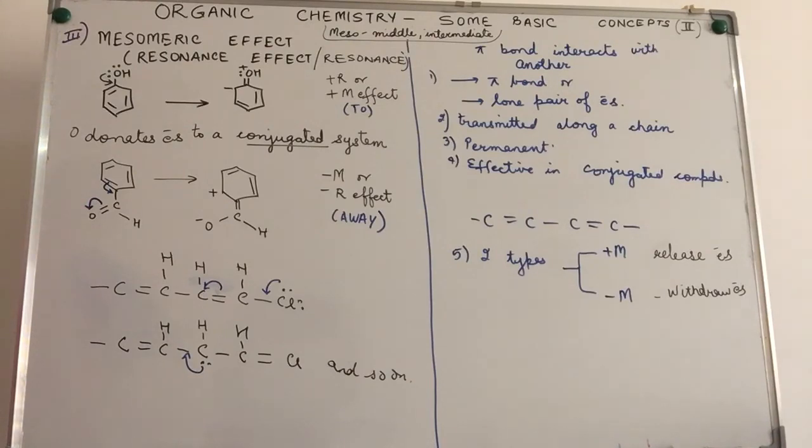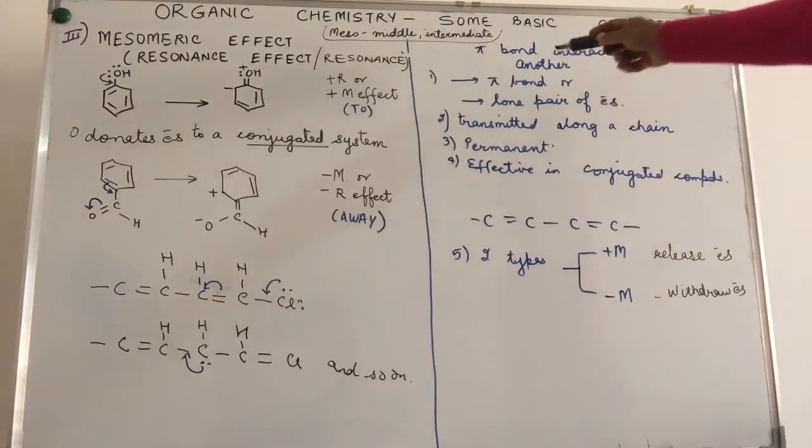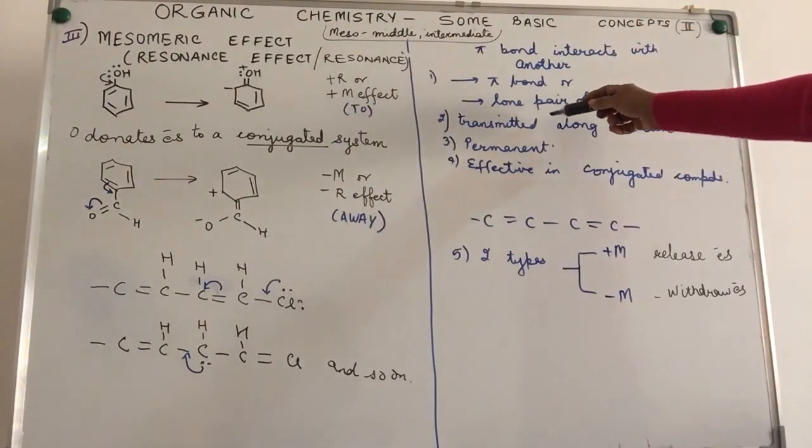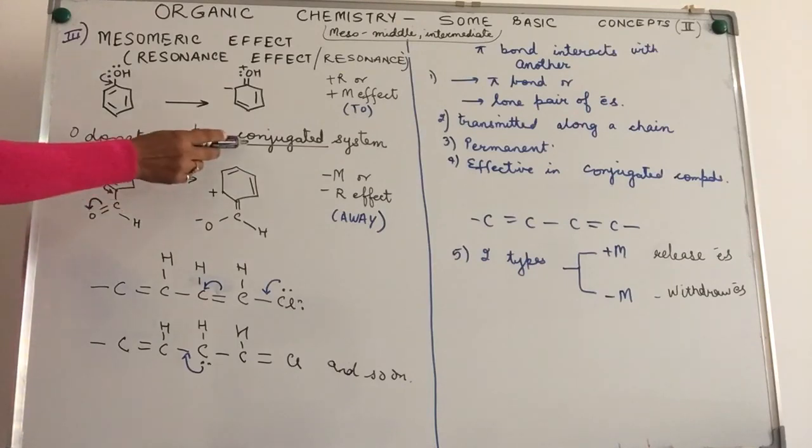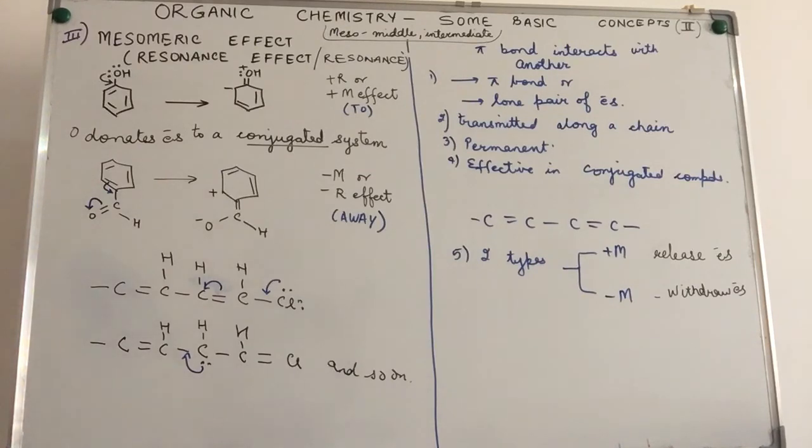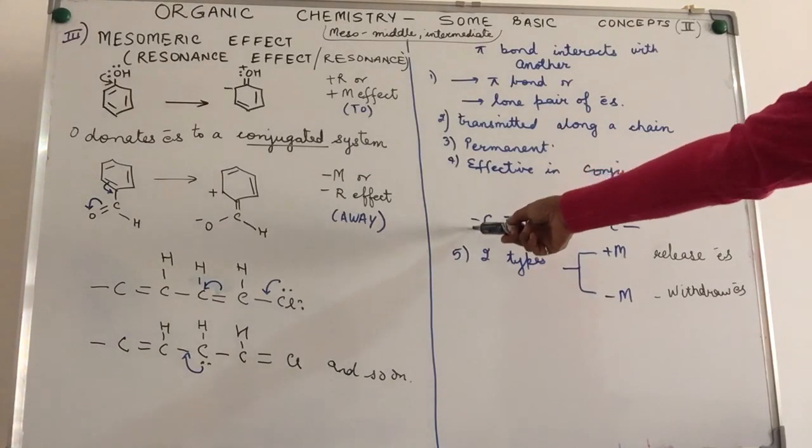In electromeric effect you read that the pi electrons are involved and there is temporary dislocation of the electrons due to the presence of a reagent. Mesomeric effect means wherein either a set of two pi bonds is involved or pi bond and a lone pair of electrons is involved. Here either the atom or the group which is attached to a conjugated system - what is a conjugated system? It is a system of alternate double and single bonds. Simple, this is a conjugated system.